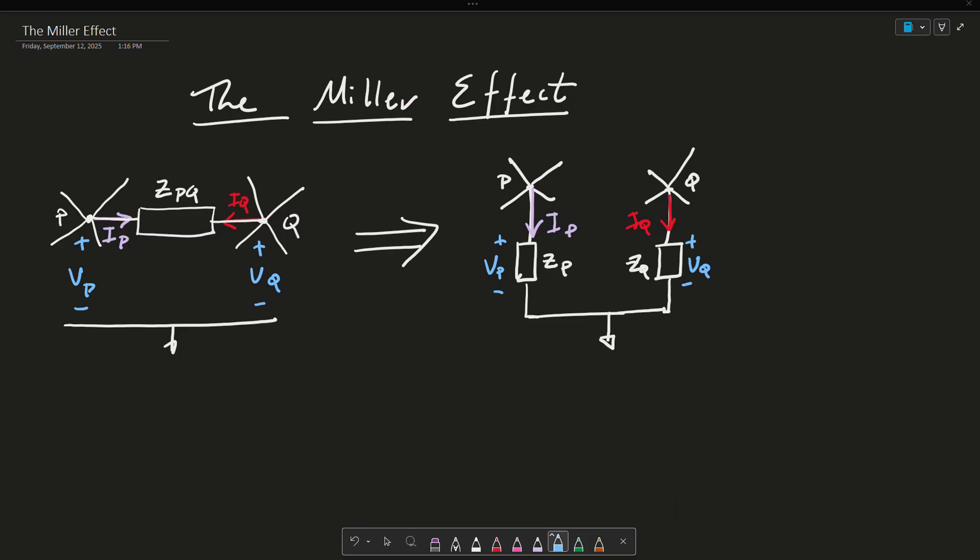The Miller Effect is a physical phenomenon derived from Miller's Theorem, which states that if you have an impedance ZPQ connected between an input and output of an amplifier or a circuit, let me say input here, output here.